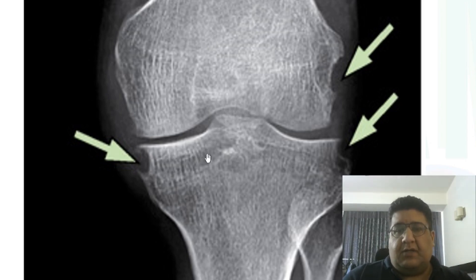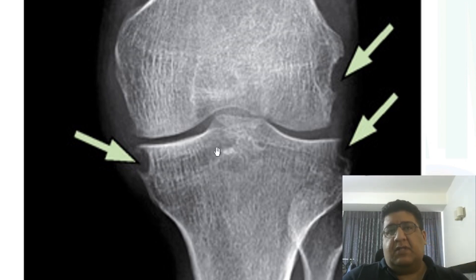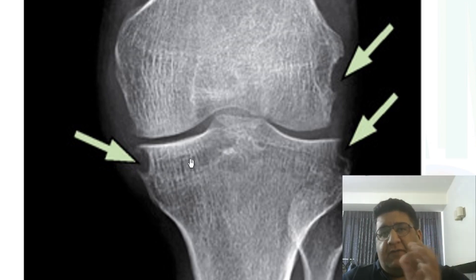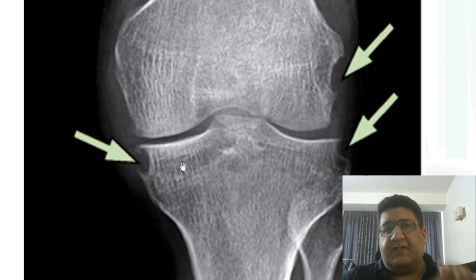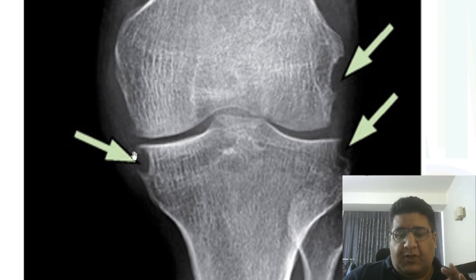This osteopenia is seen adjacent to the joint. The word for adjacent is 'juxta,' and for joint it's 'articular,' so what you are looking at is the X-ray sign called juxta-articular osteopenia. This is not only part of Phemister's triad — it is also the first X-ray finding of tubercular arthritis.